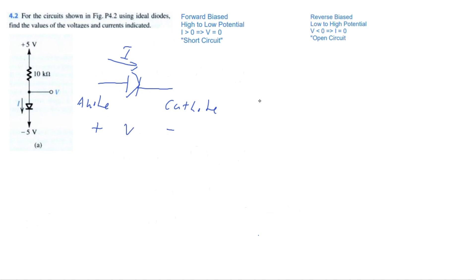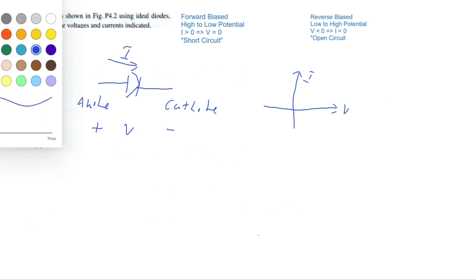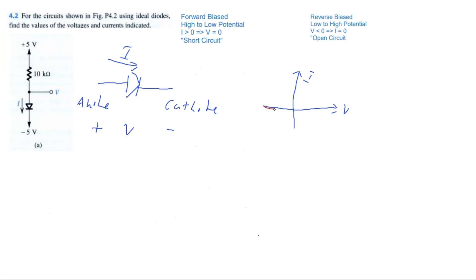What does the current and voltage relationship look like for a diode? Here we have voltage on one axis and current on the other. As the voltage drop across the diode is less than zero, there will be no current — it will act like an open circuit. But once the voltage drop equals zero, it will act like a short circuit and conduct current.